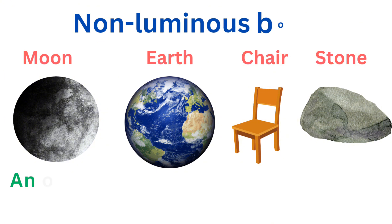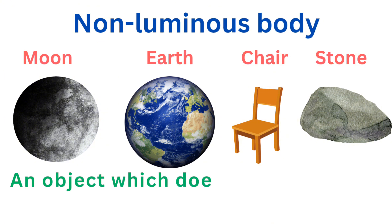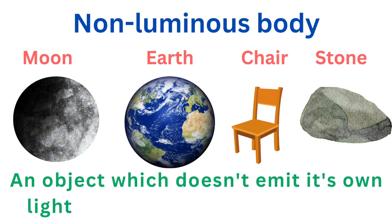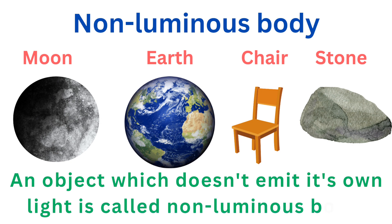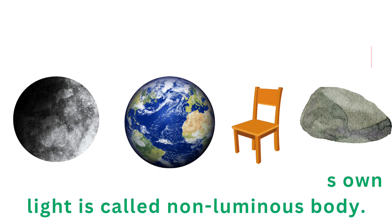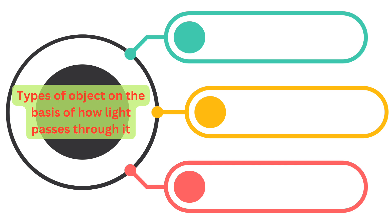Non-luminous body. An object which doesn't emit its own light is called a non-luminous body. Moon, earth, chair, stones, etc. are some non-luminous bodies.